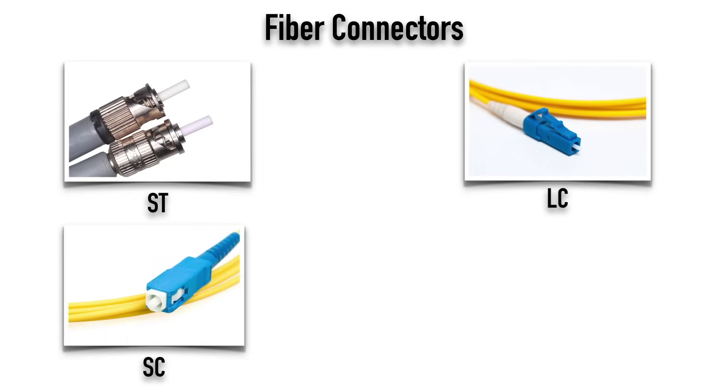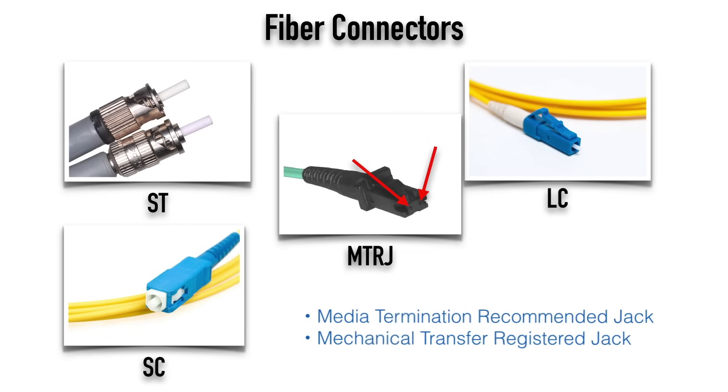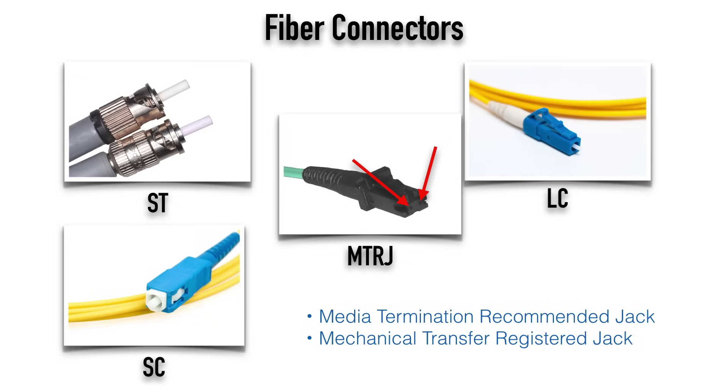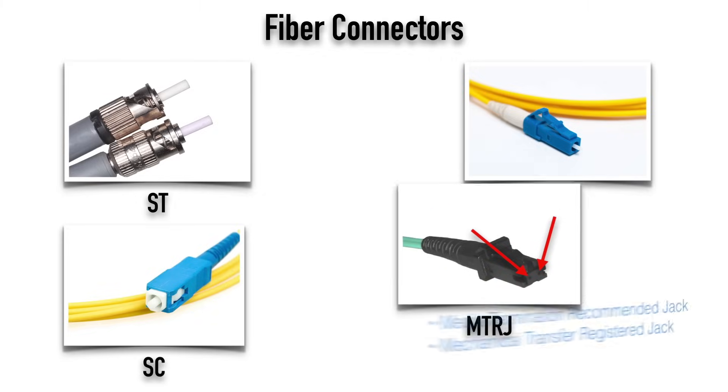The other type of connector that I showed you just a few moments ago was an MTRJ. And the thing that's really unique about an MTRJ is it contains both fiber optic strands, one for transmit, one for receive. It contains both in a single connector, which allows us to have a higher density of connectors. An MTRJ, it might stand for, depending on your source, media termination recommended jack, or mechanical transfer register jack.